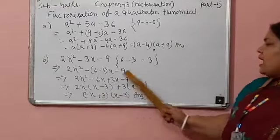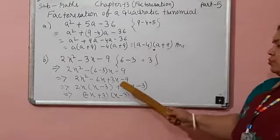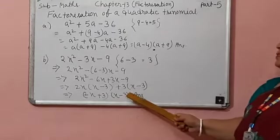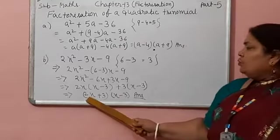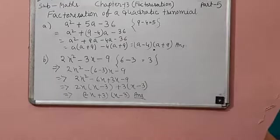Now x minus 3 and x minus 3 is common. So we take x minus 3 as common. And remaining part 2x plus 3. That means final answer is 2x plus 3 bracket close. X minus 3 bracket close.